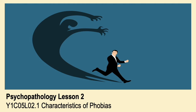Hello everyone and welcome to Psychopathology Lesson 2. This lesson is going to be split into two separate videos. This first video is Lesson 2.1, where we'll look at definitions of phobias, different types of phobias, characteristics of phobias, and finish off with a look at some exam questions. Lesson 2.2, linked in the description below, will focus on behavioural explanations for phobias, including operant and classical conditioning.